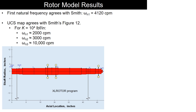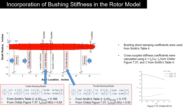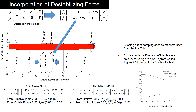To capture the occurrence of instability in rotor dynamics, a rotor-bearing-impeller layout must be modeled in the program. Once you model the rotor system, you check the natural frequencies of the rotor-bearing system. Then you incorporate the bearing and bushing model, and then incorporate the destabilizing forces from the impellers into the rotor model.